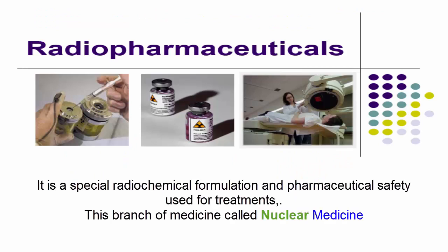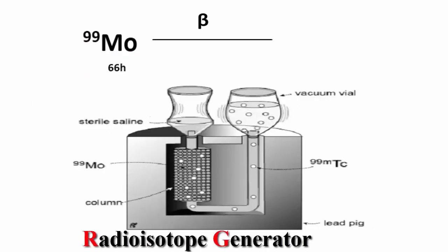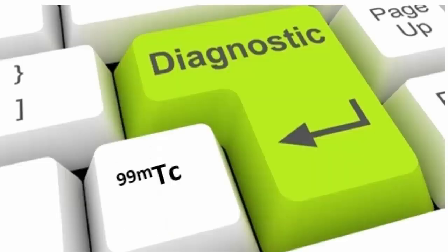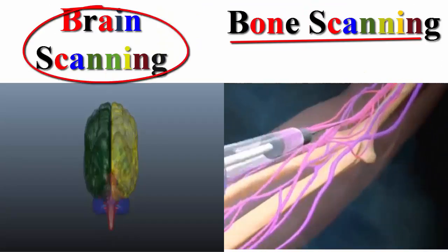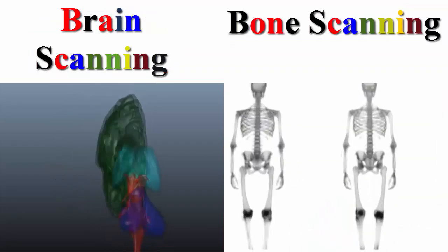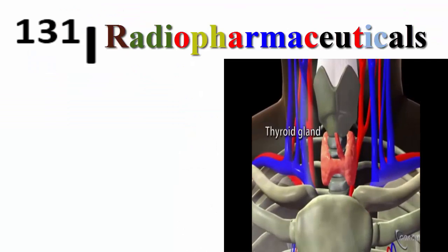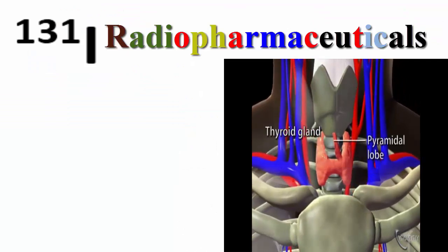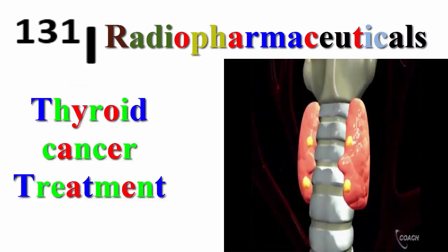Application in healthcare: radioisotopes are used in pharmaceuticals with special radiochemical formulation and pharmaceutical safety for treatments. This branch of medicine is called nuclear medicine. 99-molybdenum, produced in a nuclear reactor, is used to obtain 99m-technetium, which is used for diagnostic studies, bone scanning, and brain scanning. Another widely used isotope is iodine-131, used in the treatment of thyroid cancer globally.